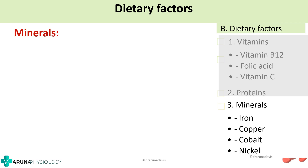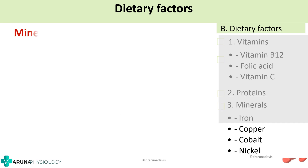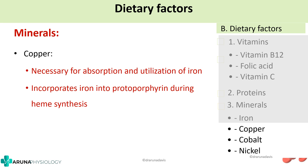Moving on to minerals: the most important mineral is iron. Iron is essential for synthesizing the heme component, and its deficiency can cause iron deficiency anemia, which pathologically is a hypochromic microcytic anemia. The other important minerals are copper and cobalt. Copper is necessary for absorption and utilization of iron and helps in incorporation of iron into the protoporphyrin ring during heme synthesis. Cobalt is a main ingredient of vitamin B12 — the scientific name of vitamin B12 is cyanocobalamin — so cobalt is needed for vitamin B12, which in turn is required for erythropoiesis.